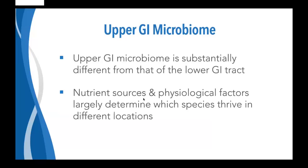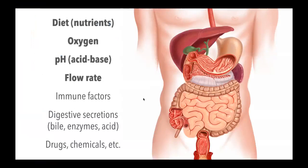Nutrient sources and physiological factors largely determine which species tend to thrive in different locations. Key factors known to influence the microbiome include diet — particularly which types of nutrients are available in a particular part of the GI tract — oxygen levels, which generally decrease as you go along the GI tract, and pH, which of course varies throughout the GI tract, especially with regard to the stomach where pH is very low. Flow rate is also very different along the GI tract — much higher in the small intestine and much slower in the colon, roughly tenfold lower on average.